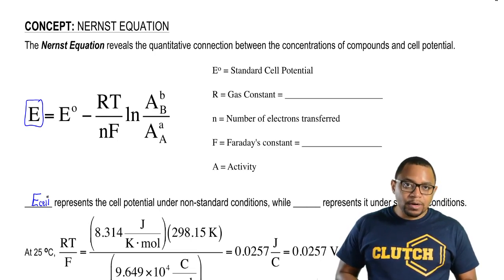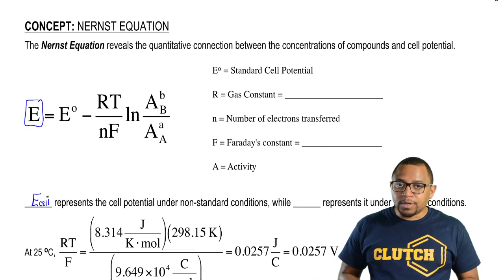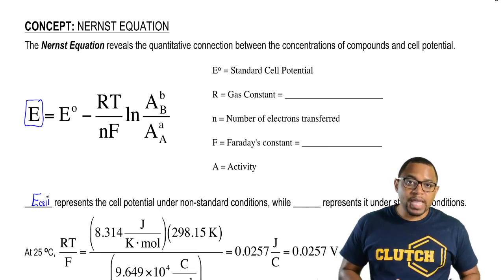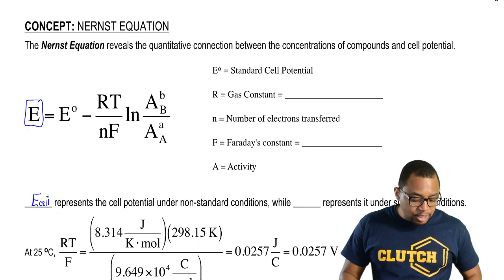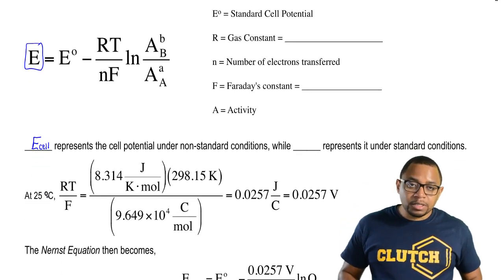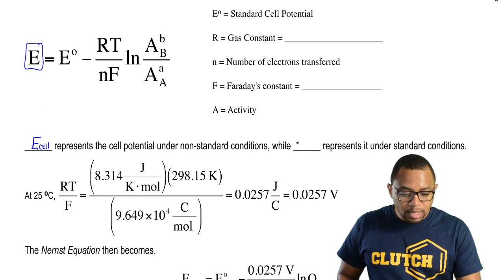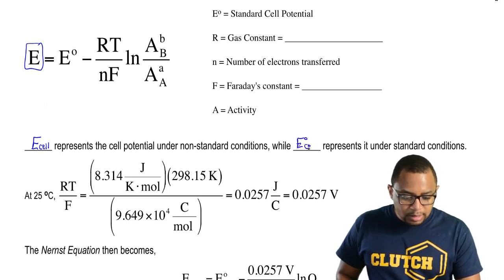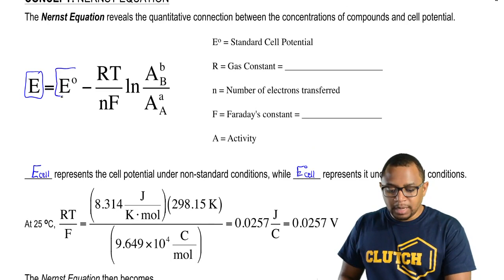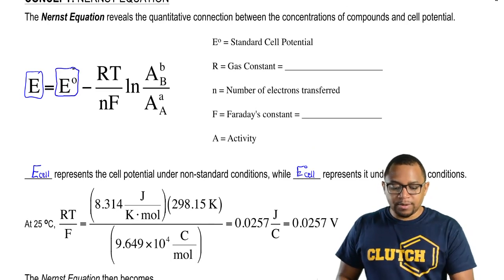Standard conditions are: one atmosphere, pH of seven, a temperature of 25 degrees Celsius, as well as a concentration of one molar. When we have all of these conditions met, that means we're dealing with cell potential under standard conditions, so that's E-zero cell. This represents our cell potential under standard conditions.